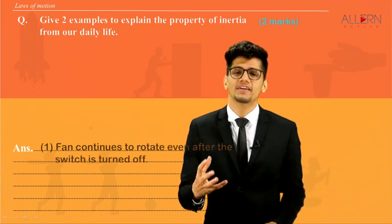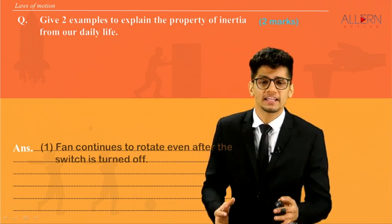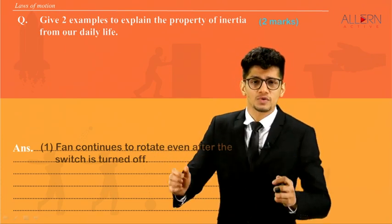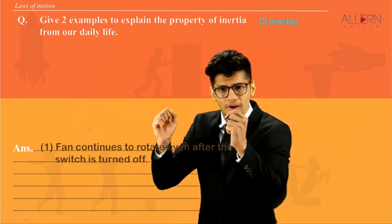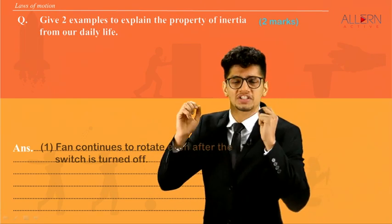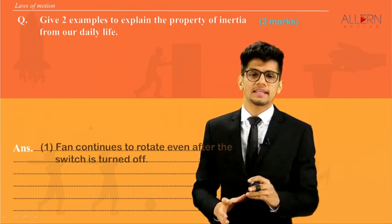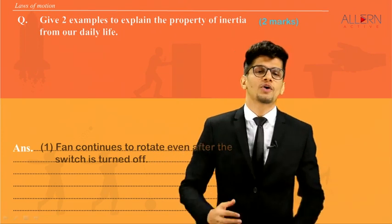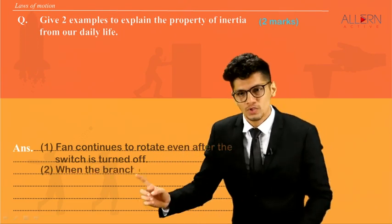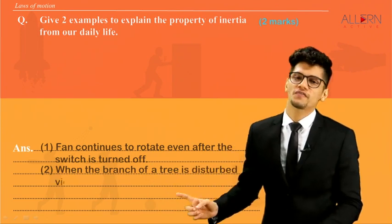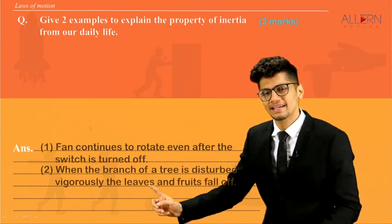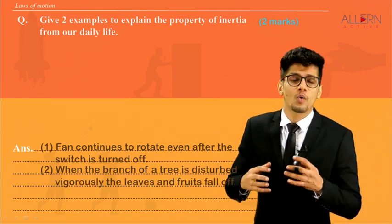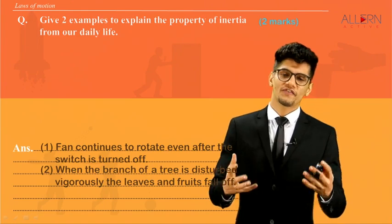The second example is the branch of a tree. If we shake the branch of the tree vigorously, the leaves and the fruit fall off. When the branch of a tree is disturbed vigorously, the leaves and fruits fall off — why? Because of inertia.